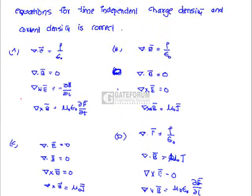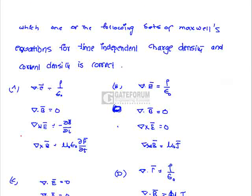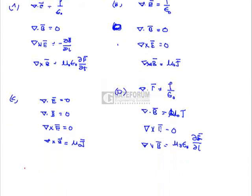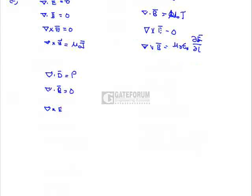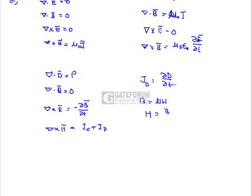Here the question is, which one of the following sets of Maxwell's equations for the time-independent charge density and current density are correct. We know that the Maxwell's equations are: div D is rho, div B is 0, curl E is nothing but minus dB by dt, and curl H is nothing but conduction current density plus displacement current density. We know that Jd is nothing but dD by dt. B equals mu H. H is nothing but B by mu.